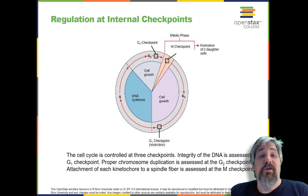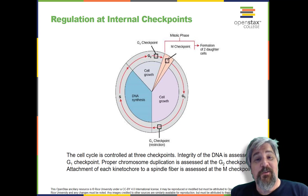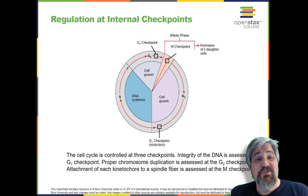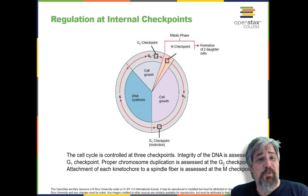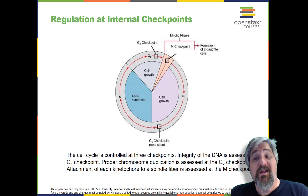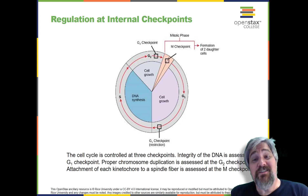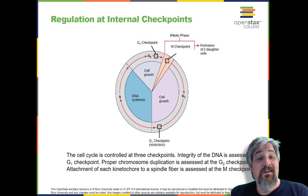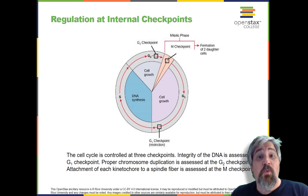Regulation at internal checkpoints. It is essential that daughter cells be exact duplicates of the parent cell. Mistakes in the duplication or distribution of the chromosomes leads to mutations that may be passed forward to every new cell produced from the abnormal cell. To prevent a compromised cell from continuing to divide, there are internal control mechanisms that operate at three main cell cycle checkpoints at which the cell cycle can be stopped until conditions are favorable. These checkpoints occur near the end of G1, at the G2 to M transition, and during metaphase.